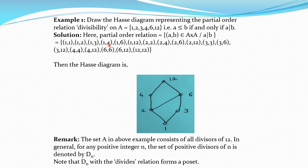To draw the Hasse diagram, we represent 1, 2, 3, 4, 6, 12 each by a small circle. As 1 divides every element but no element in this set divides 1, 1 is at the lowest level. So we start with 1, represented by a small circle with no element below it.